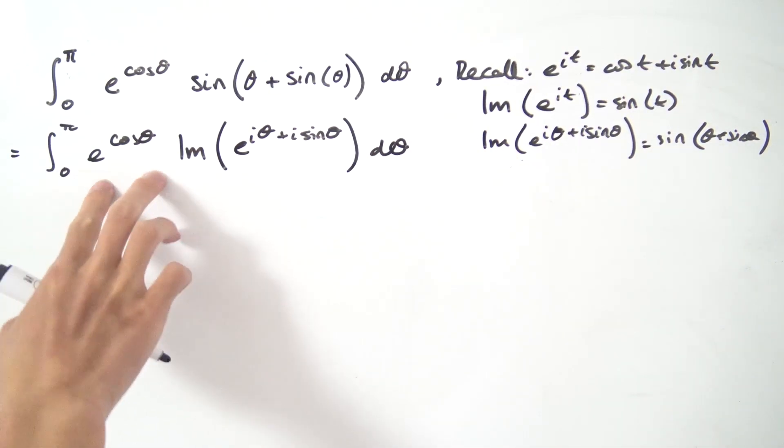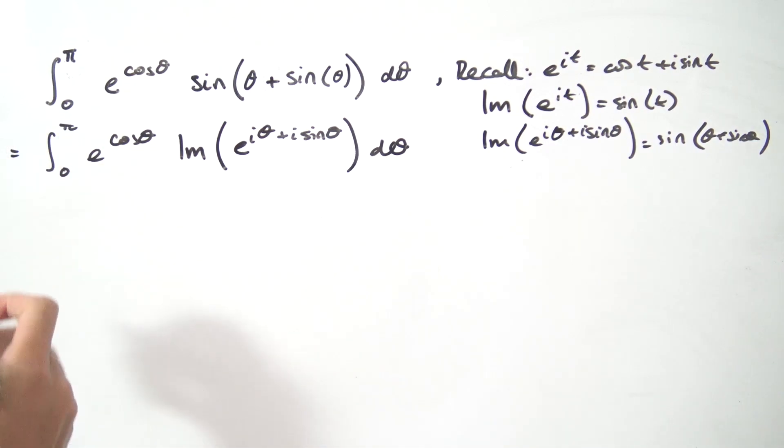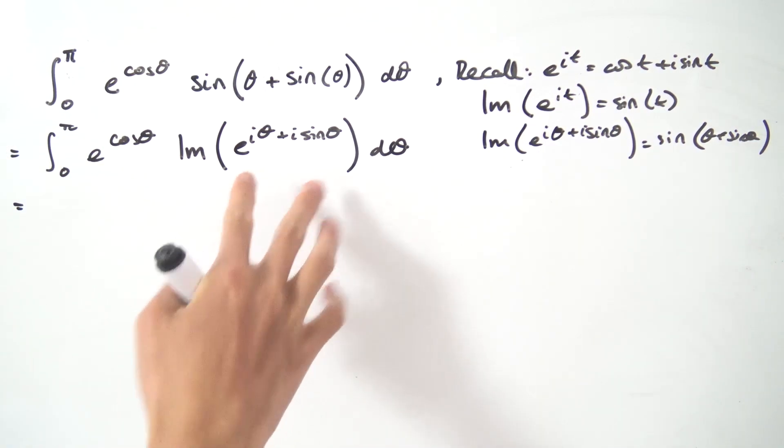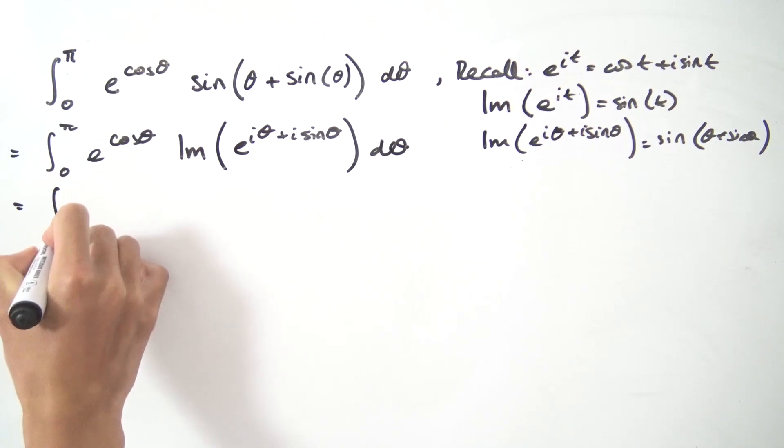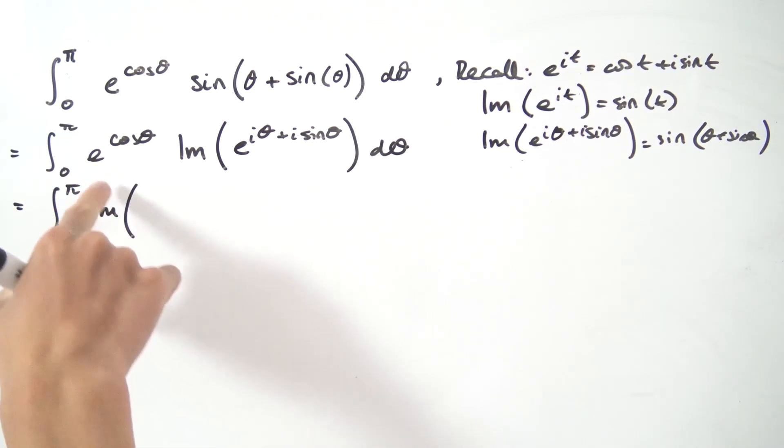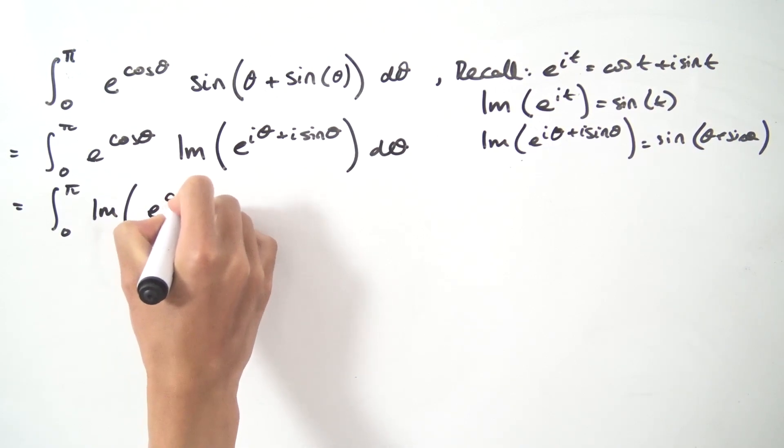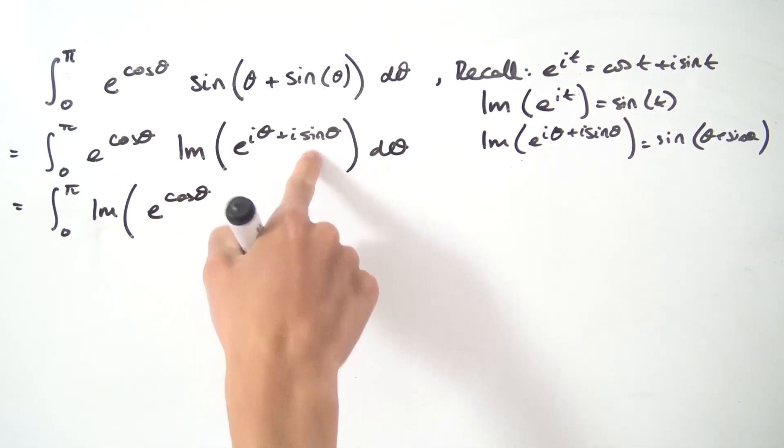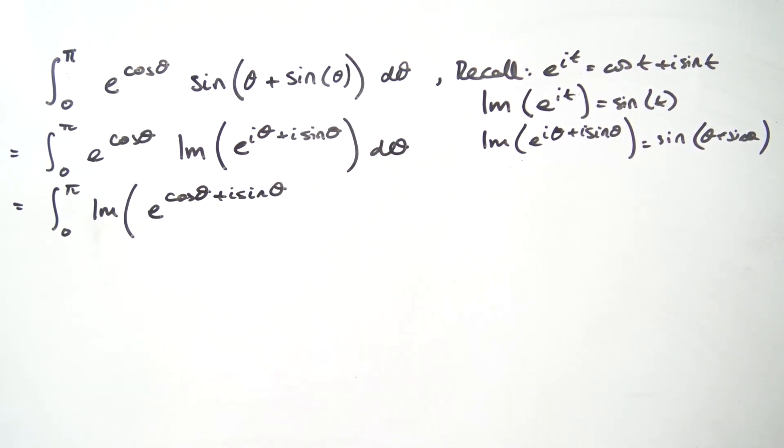You'll notice that we have this e to the cosine theta which is a real function, so we can just drag and drop it into this imaginary part operator. We have the integral from zero to pi of the imaginary part of, and now we can use exponential properties to combine these two exponential functions together. We're going to have e to the cosine of theta plus i sine theta plus i times theta.